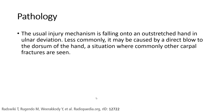Usually the injury mechanism is falling onto the outstretched hand in ulnar deviation. Less commonly, it may be caused by a direct blow to the dorsum of the wrist, in which case a comminuted fracture may result.